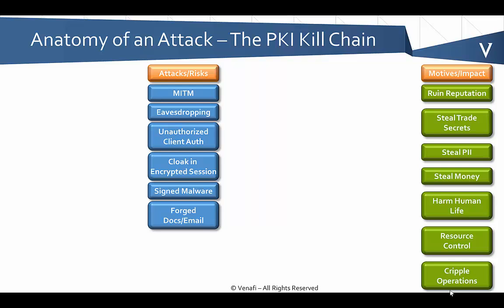The next one is signed malware, and this has been very broadly exploited, where an attacker gets a certificate that's broadly trusted, signs their malware with it, and then it's broadly trusted as well. The final one is forging digital signatures on documents or email to perform certain operations — if an attacker can forge a signature, they can cause an organization to do something that was unauthorized.